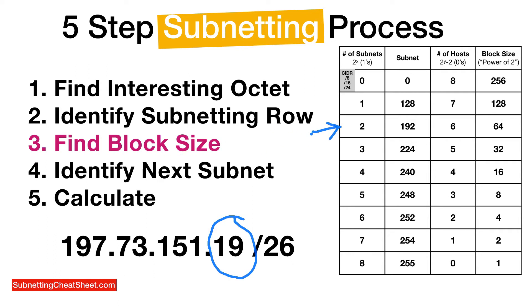The block size is pretty important because it helps you to figure out which subnetting block you're solving for. So for this IP address with slash 26, the block size is 64.